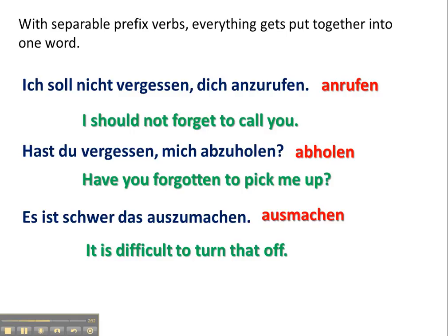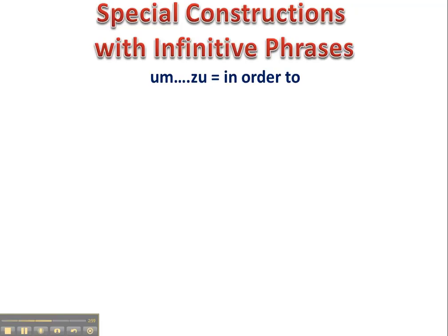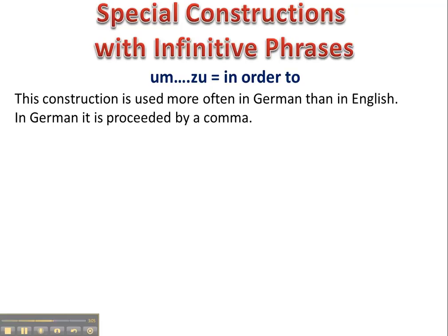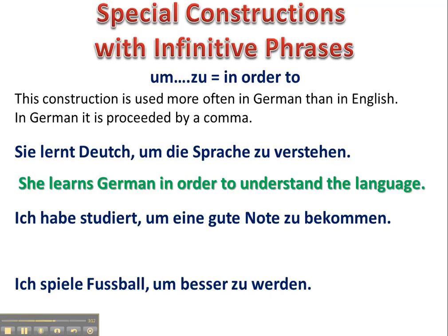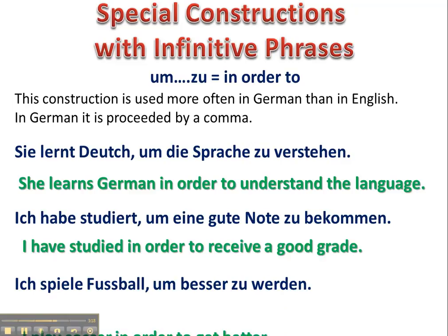There are some special constructions to consider with infinitive phrases. 'Um zu' is often used in German, more so than in English, and is often preceded by a comma. 'Sie lernt Deutsch, um die Sprache zu verstehen' — she's learning German in order to understand the language. 'Ich habe studiert, um eine gute Note zu bekommen.' 'Ich spiele Fußball, um besser zu werden.' These are special constructions meaning 'in order to.'